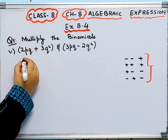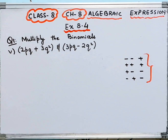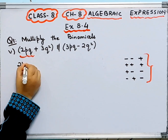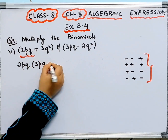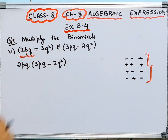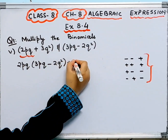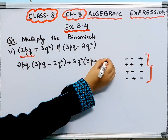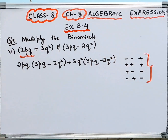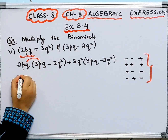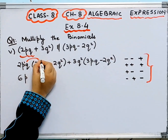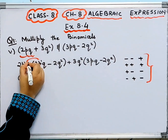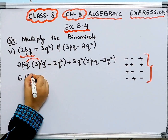Now the fifth part. You have 2pq multiplied by the whole expression 3pq minus 2q squared, plus 3q squared multiplied by the whole expression 3pq minus 2q squared. Multiplying 2pq by 3pq: 2 times 3 is 6, p squared, and q has power 1 plus 1 equals 2, giving 6p squared q squared.